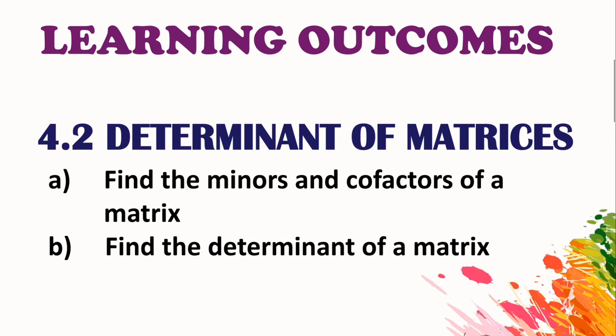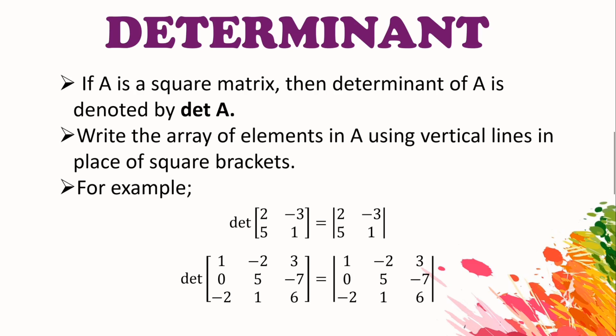In this video we are going to focus only on determinant for 2x2 matrices. Determinant: if A is a square matrix, then determinant of A is denoted by det A, or we simply write the array of the elements in A using vertical lines in place of the square brackets.